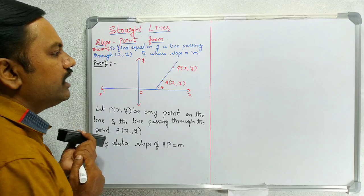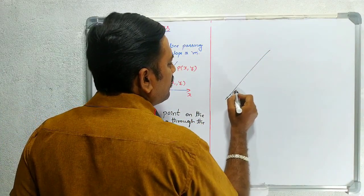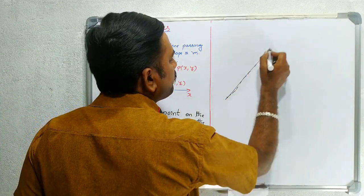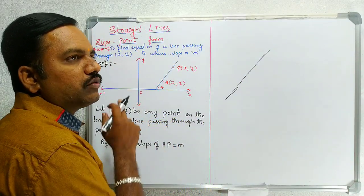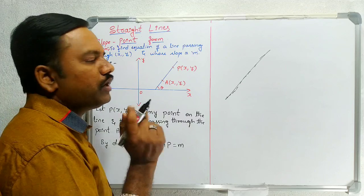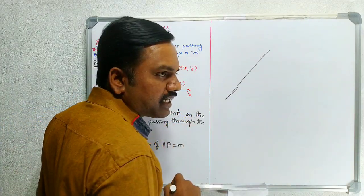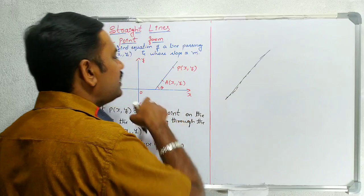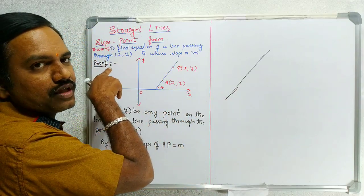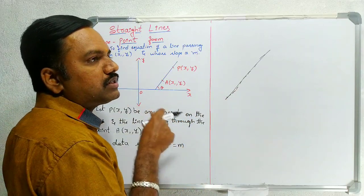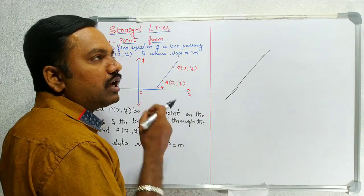A line has infinite points passing through it. One line has infinite points on it.